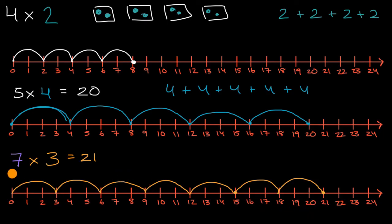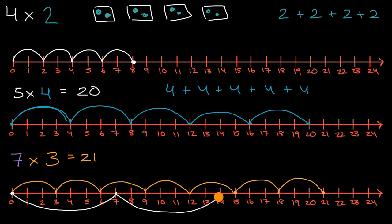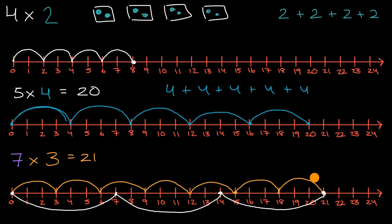Now just out of interest, what if we went the other way around — what if we were to take three hops of seven? We would start here, take our first hop of seven and get to seven, then another hop of seven to get to 14, and then another hop of seven to get to 21. Interesting — at least for this situation, whether we took seven hops of three or three hops of seven, we got to the exact same value. I encourage you to think about whether that's always going to be the case.